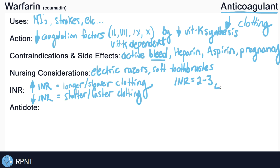Let's say you have a patient with an INR of 4 — out of the 2 to 3 range. Their INR is too high, meaning it's taking too long for the patient's blood to clot. So if they have an injury, whether internal or external, it's taking too long for their blood to clot, which puts them at a greater risk for bleeding. The more warfarin you give to your patient, the higher their INR becomes. So if a patient's INR is 4, you can expect that the doctor is going to decrease the dose of warfarin.